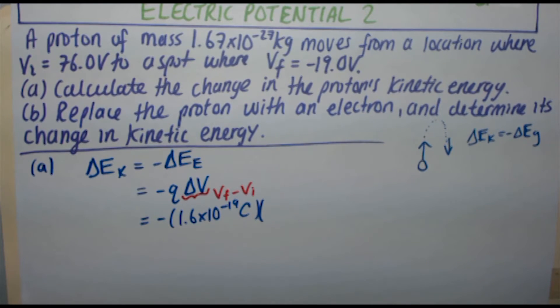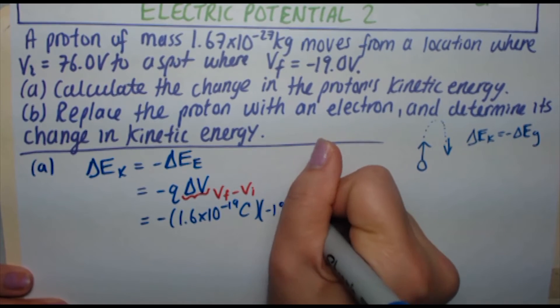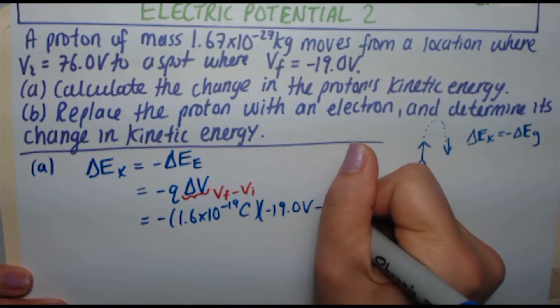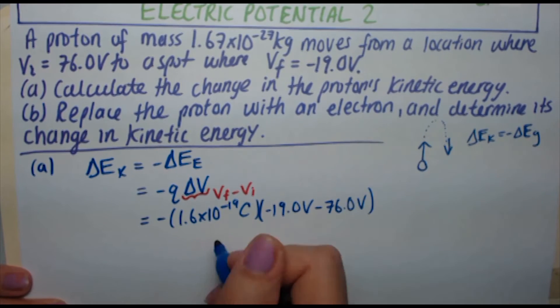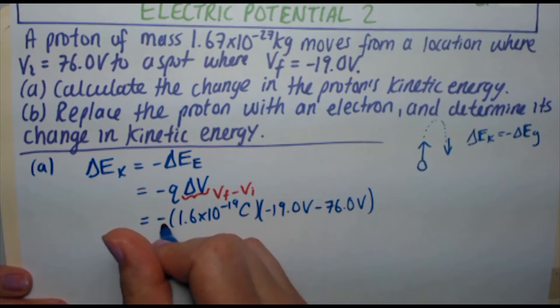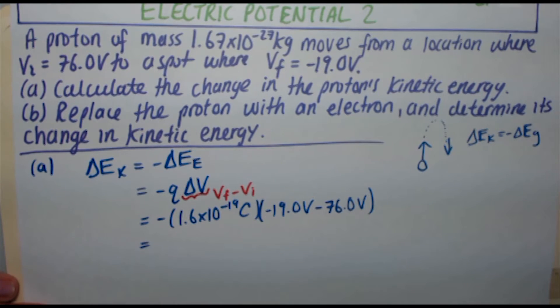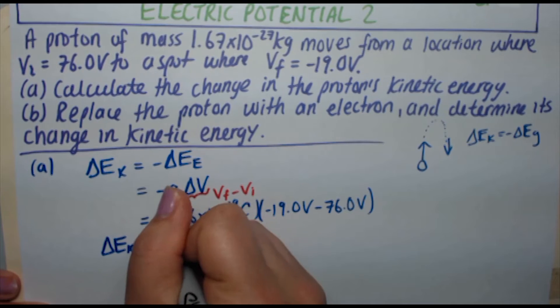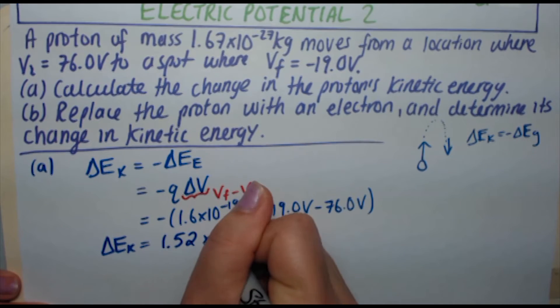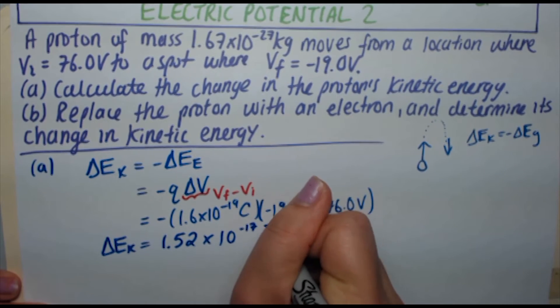So minus 19 volts subtract 76.0 volts. This is going to become a very large negative number. That negative with this negative here is going to become positive. So overall giving me my change in kinetic energy to be 1.52 times 10 to the minus 17 joules.